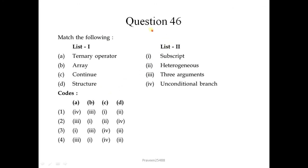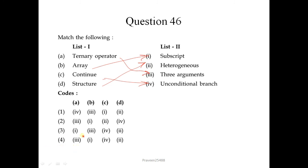Question number 46: match the following. The ternary operator takes three arguments. Array is matched with subscript. The continue statement is an unconditional branch. And structure is matched with heterogeneous. So the correct sequence is 3, 1, 4, 2; the correct option is the fourth one.